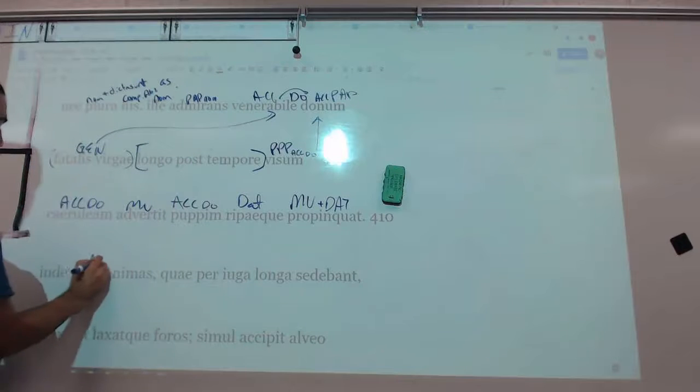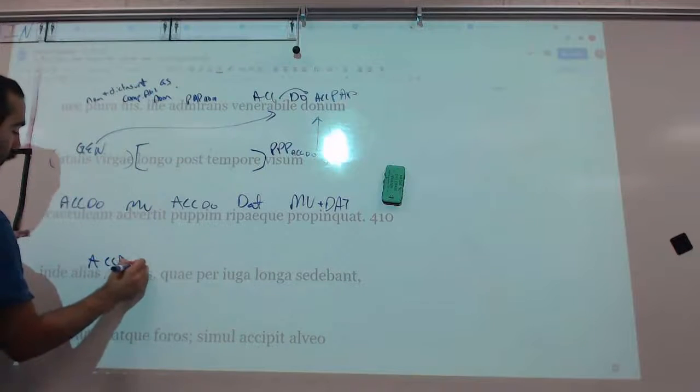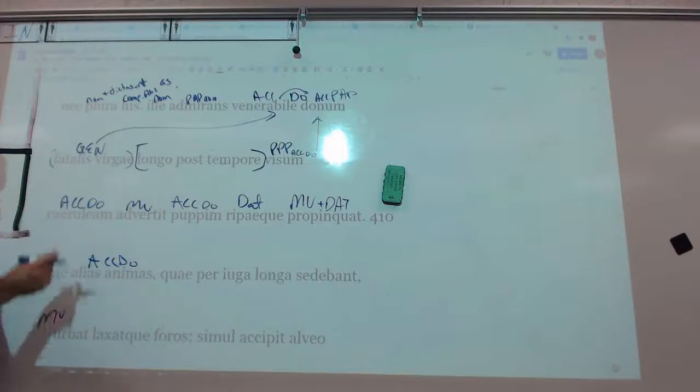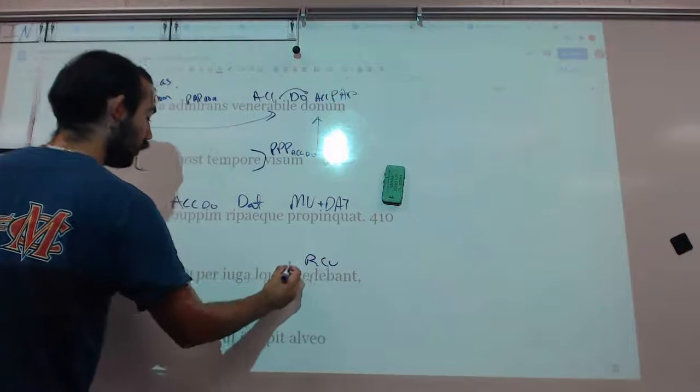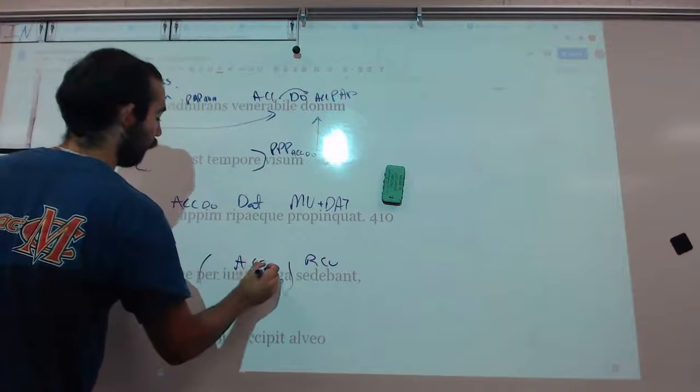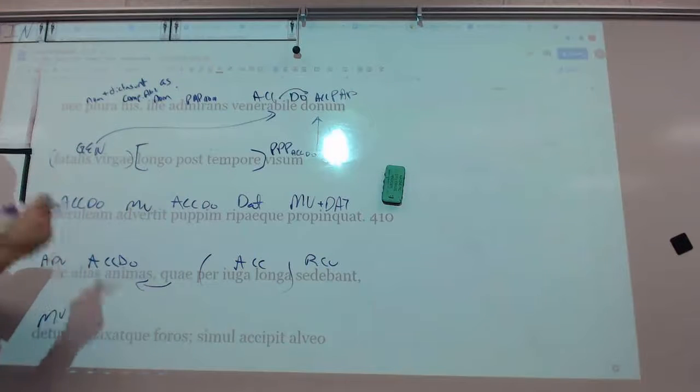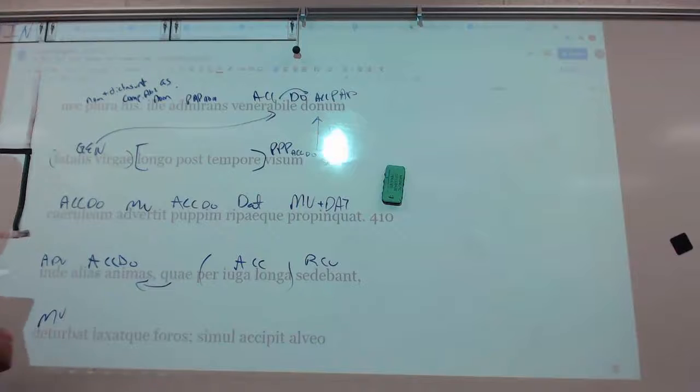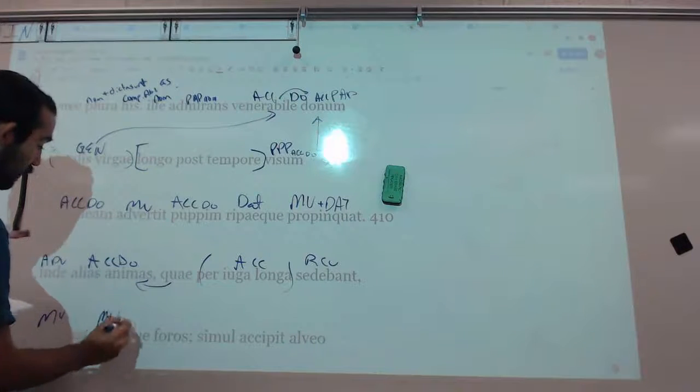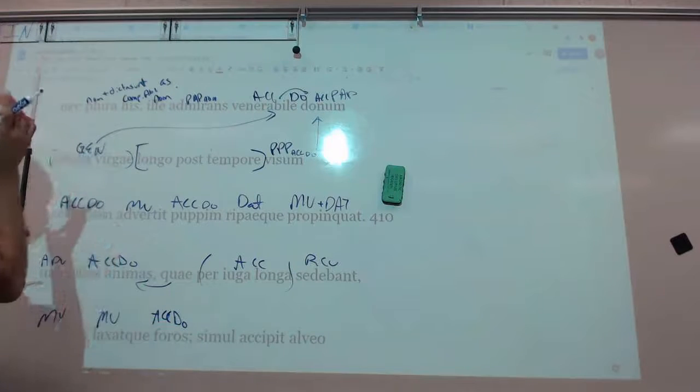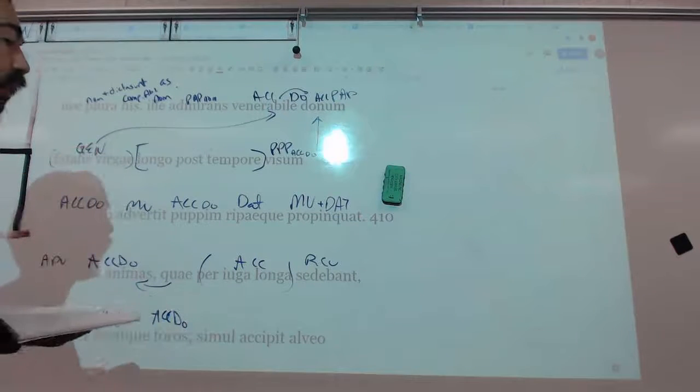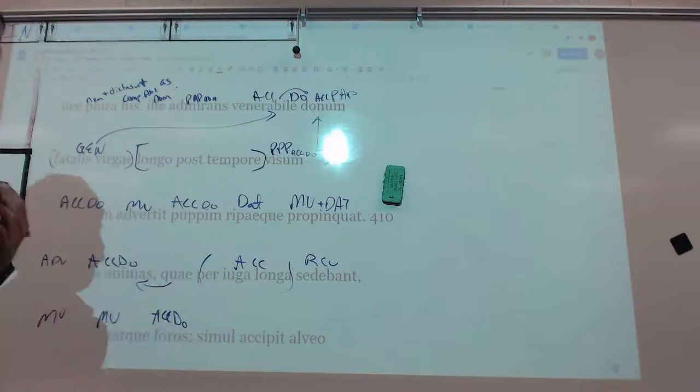From there, alias animas, is our accusative direct object, with this word, deturbat. He drives off some spirits from there who were sitting through the long benches of the ship, and he loosens, or he frees, the gangways, the way to get onto the ship, so he's only going to allow Aeneas and the Sybil to join in on the ship, on this journey.